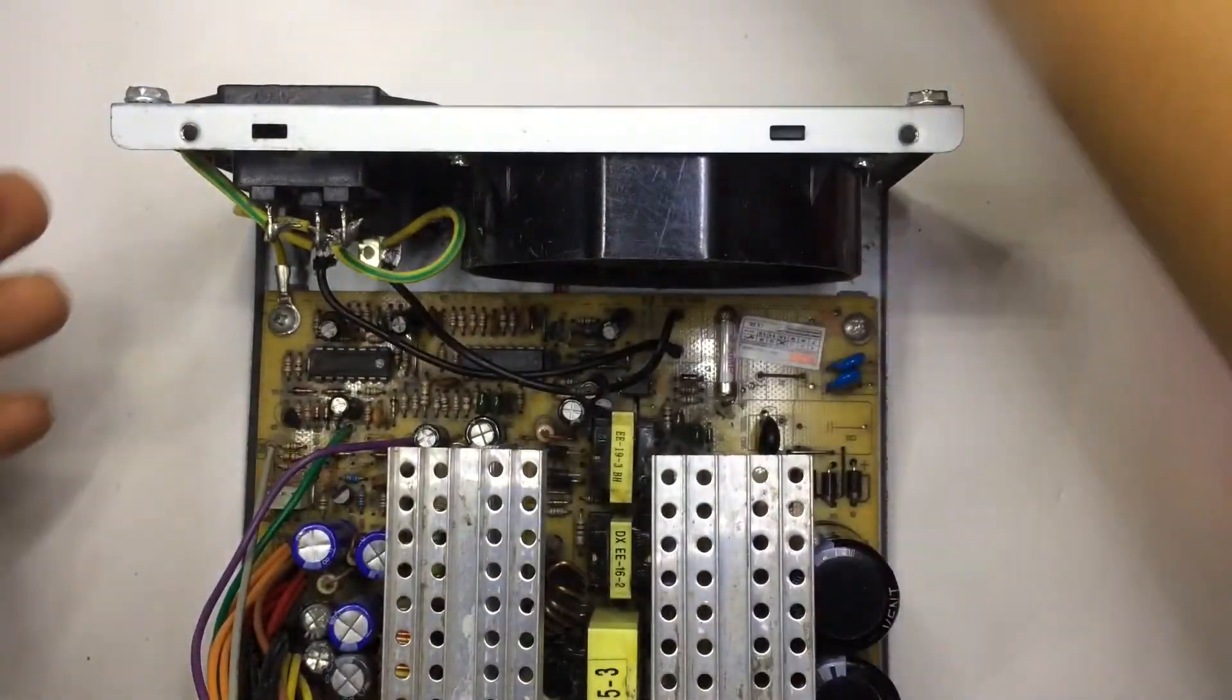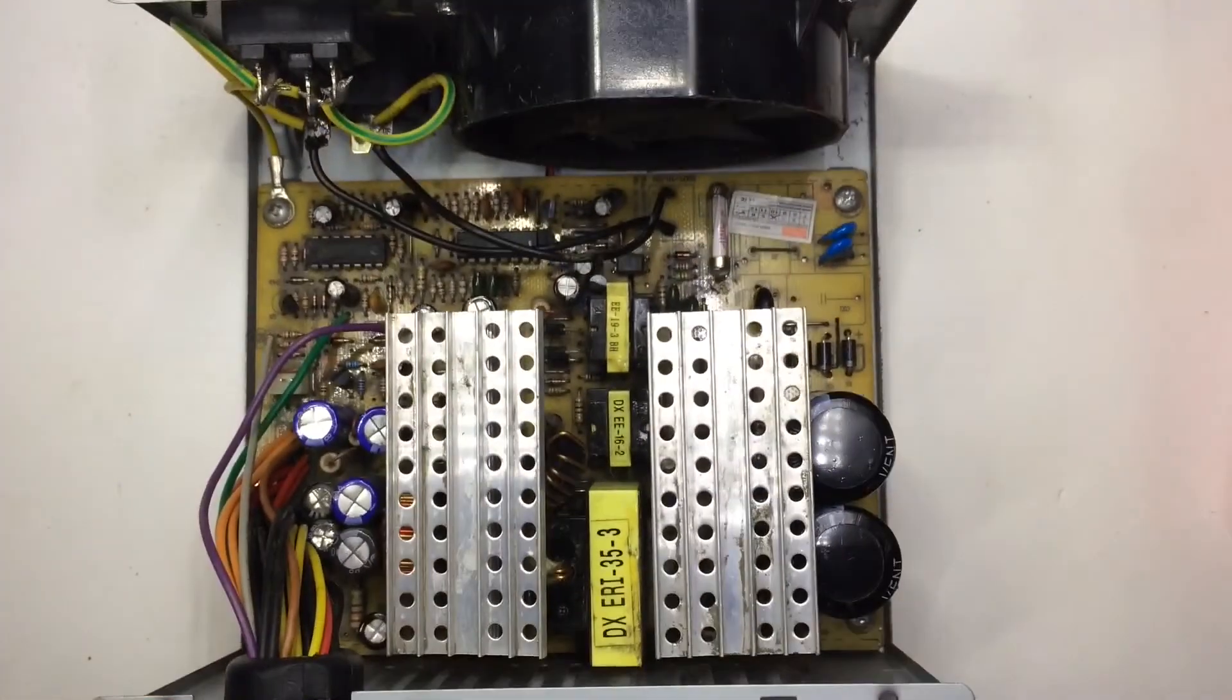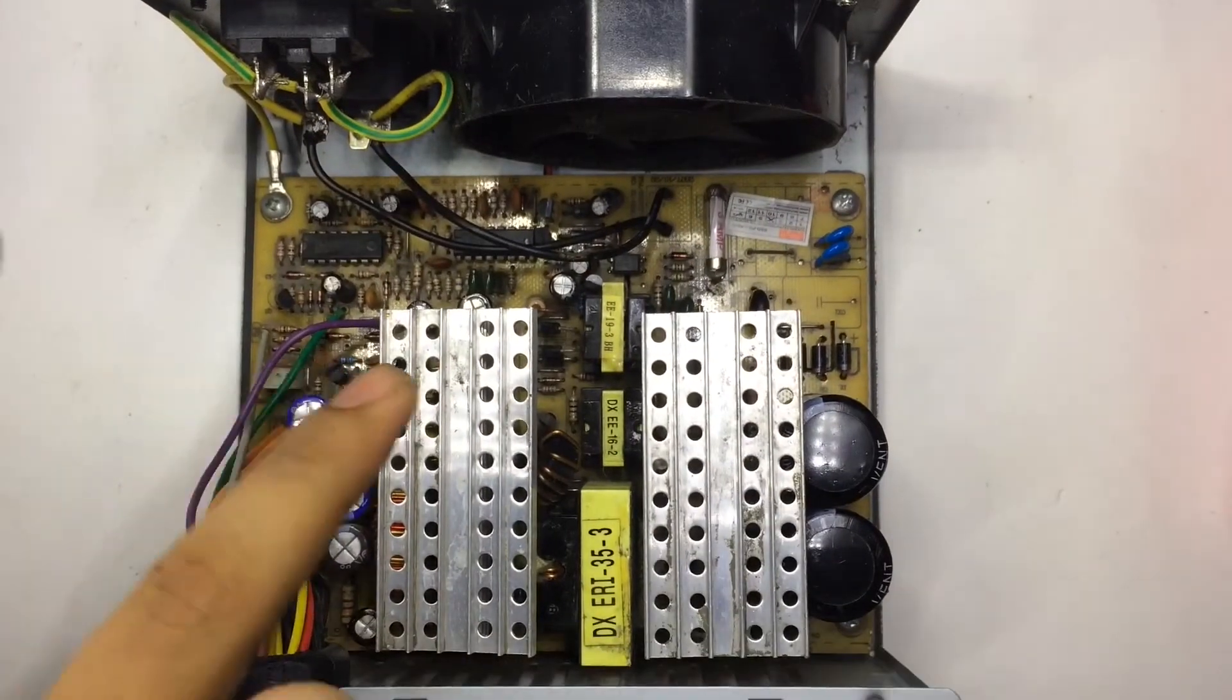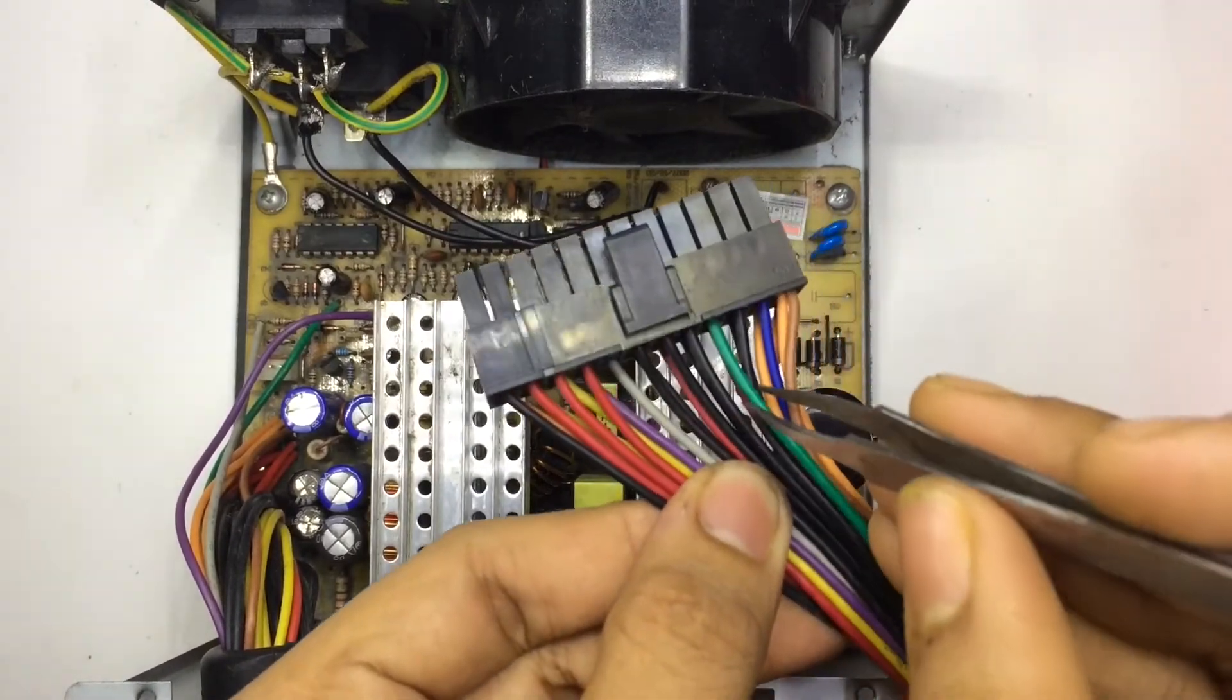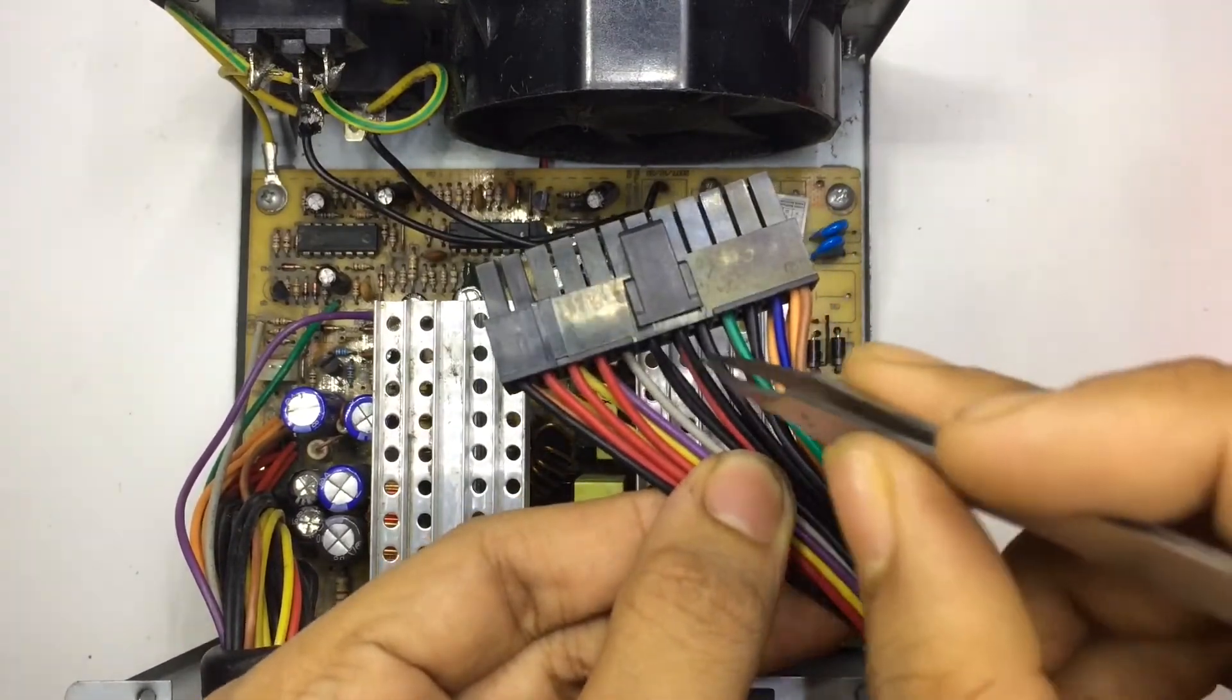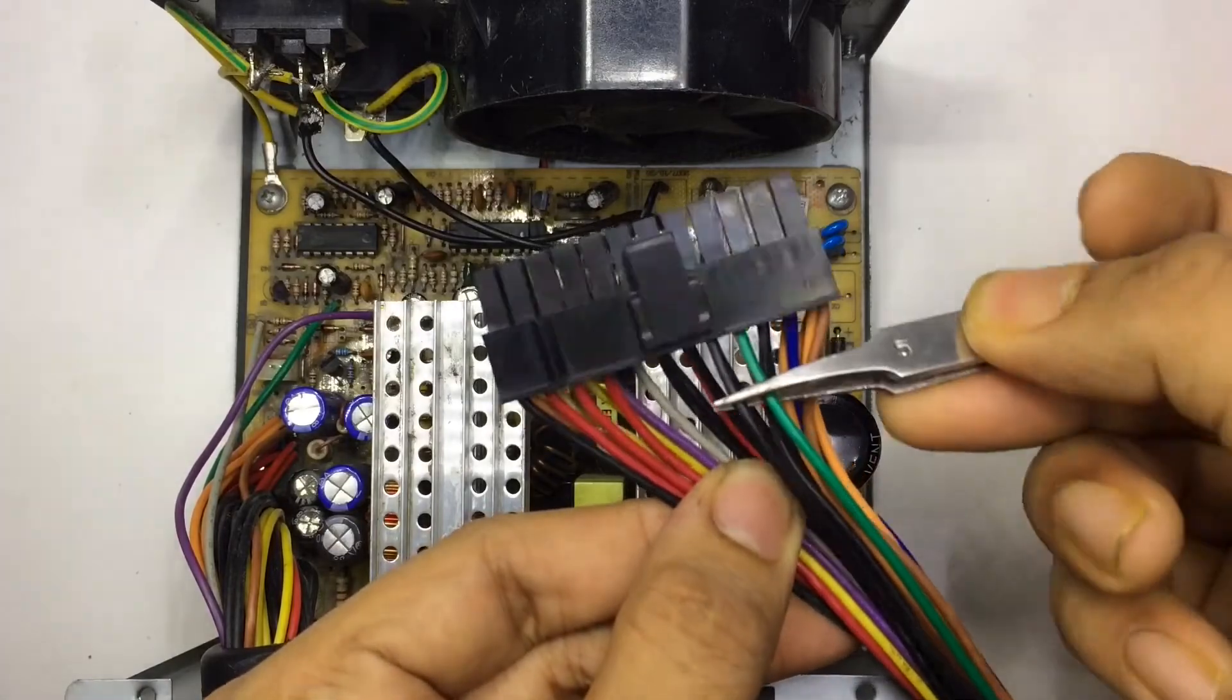So it's done. Let's plug it in. Now if you're trying to turn it on, it's not gonna work because you have to short out the green wire with any of the black wire. So I'm going to short out this green and black wire.